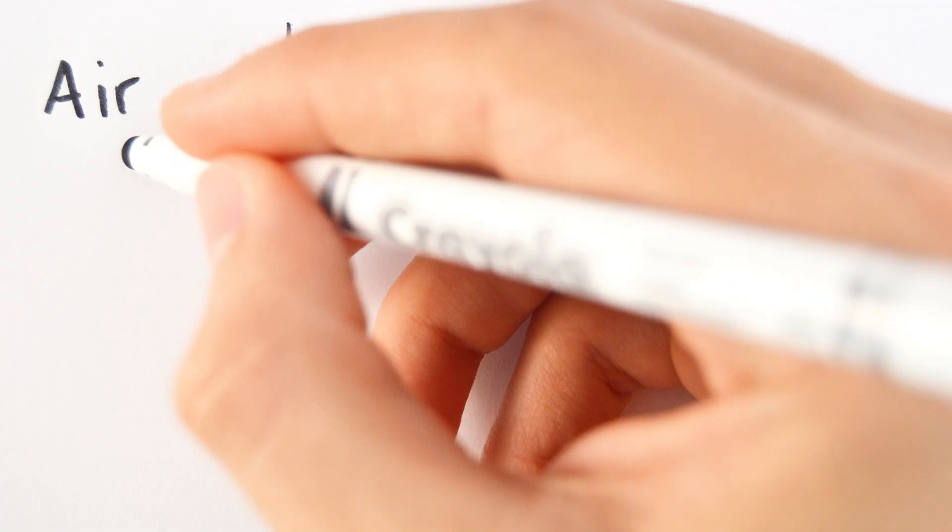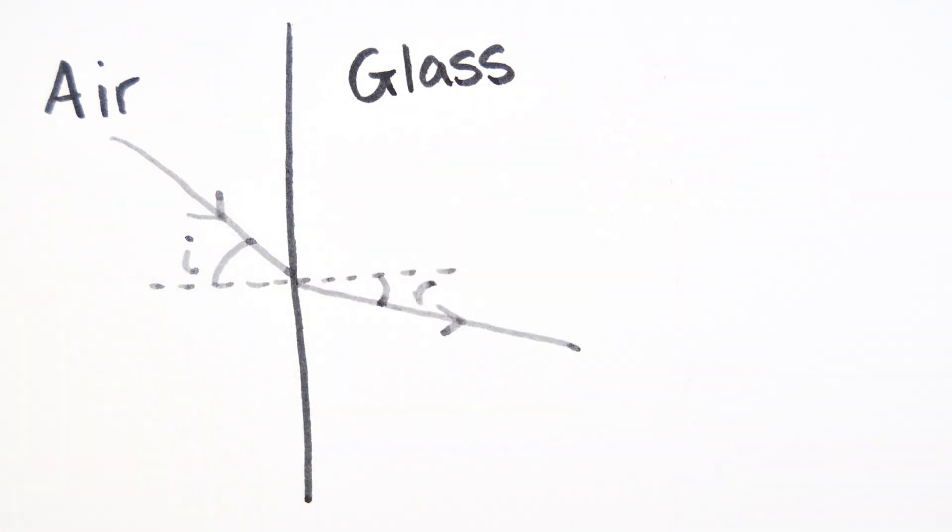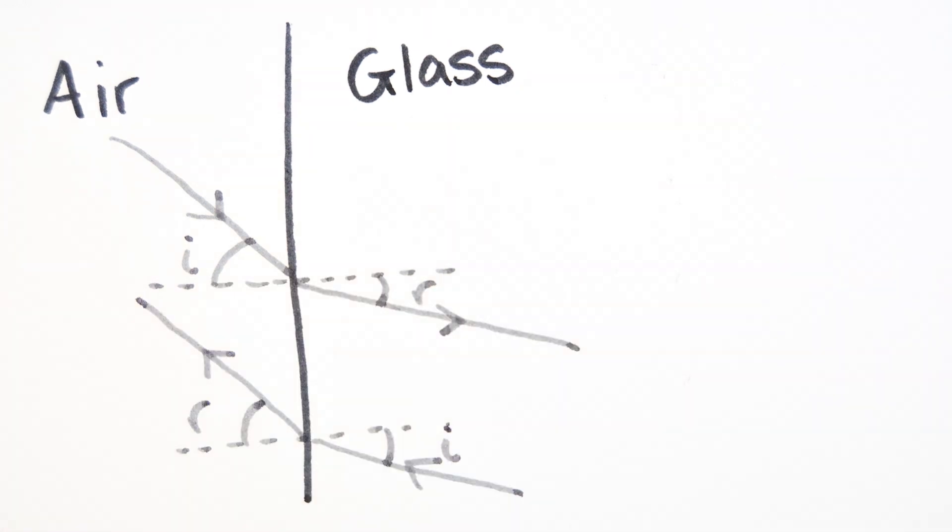Light slows down when it passes into a denser substance, like from air to glass. The angle of refraction is smaller than the angle of incidence as the light bends towards the normal. Passing through a less dense substance means the light speeds up and the rays bend away from the normal.